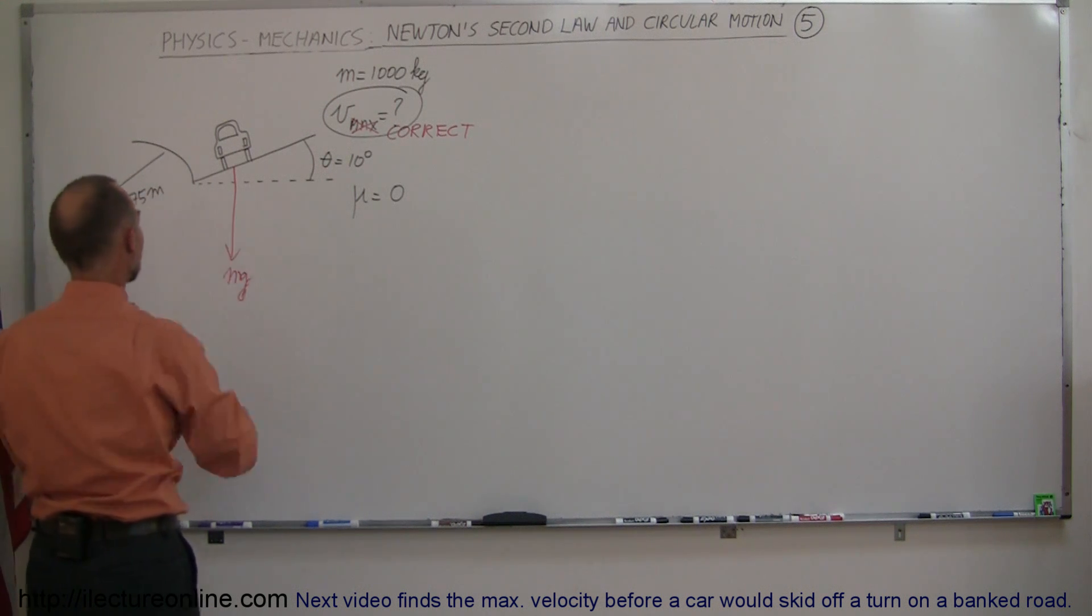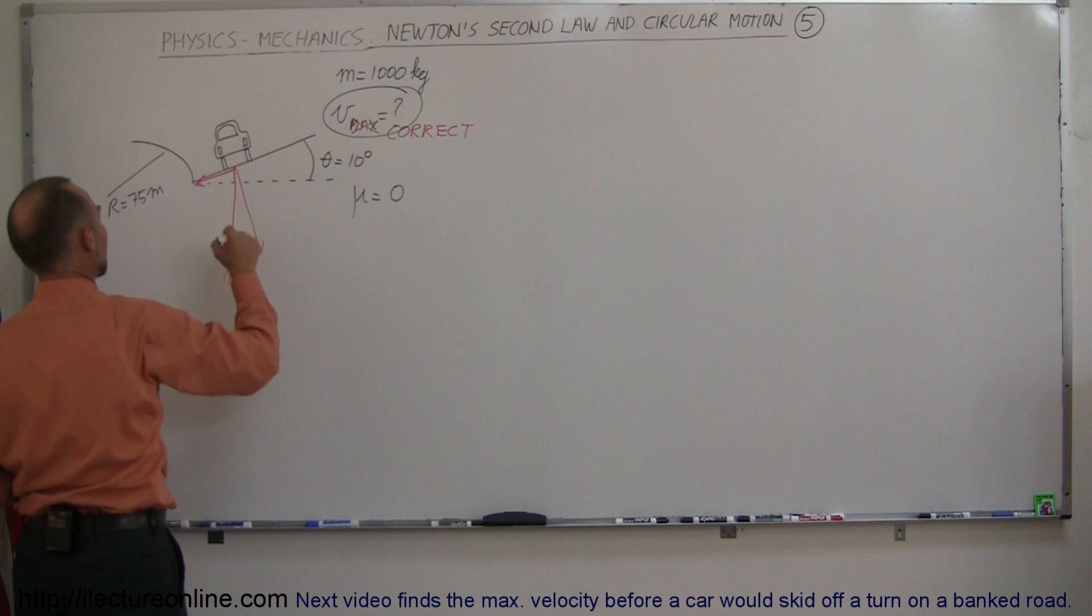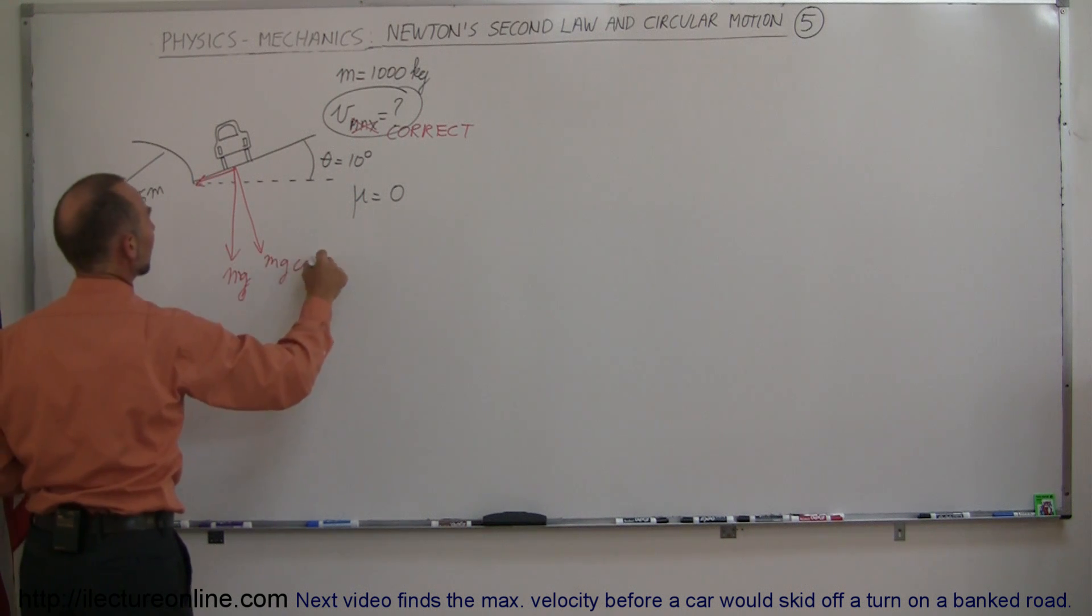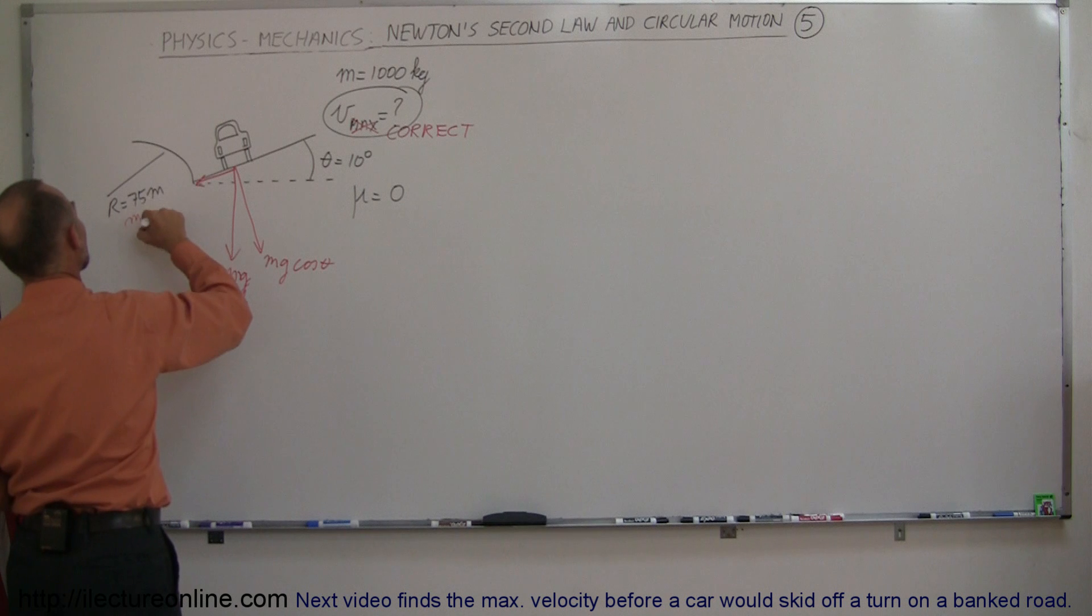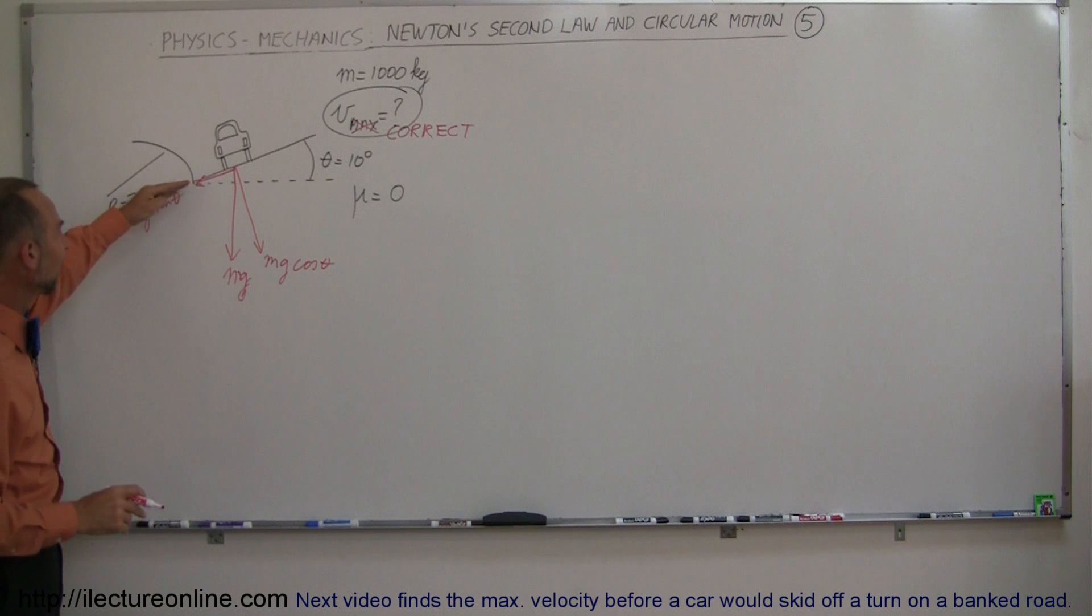Since it's on an incline, we have the perpendicular component and we have the parallel component. So here's the parallel component, this is mg times the cosine of theta, and there's the mg times the sine of theta, and of course it's the mg sine theta that would cause the car to slide down.